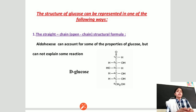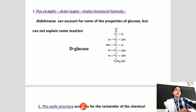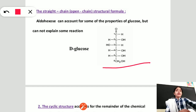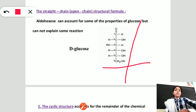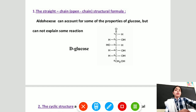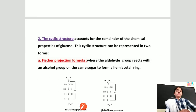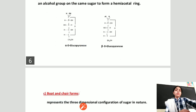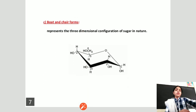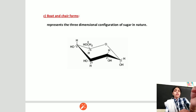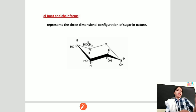Structurally, carbohydrates are categorized into three types. The first structure is the straight chain or open structure, where glucose molecules are arranged in a linear form. The second is a cyclic structure, seen in the Fischer projection formula, where glucose arranges in cyclical forms. The third form is the boat or chair form, where the glucose molecule is arranged like a boat.